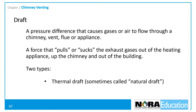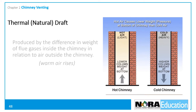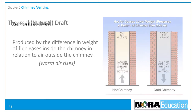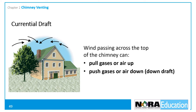Thermal draft, sometimes called natural draft, and currential draft. Thermal draft is produced by the difference in weight of a column of flue gases within a chimney or vent system, and a corresponding column of air of equal dimension outside the chimney or venting system. Currential draft occurs when wind passing across the top of a chimney creates suction and draws gases and/or air up. Currential draft can also cause downdrafts and push air down the chimney.